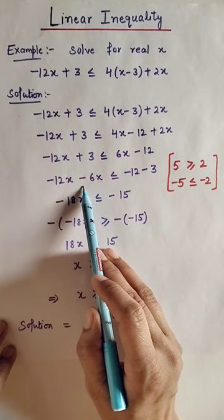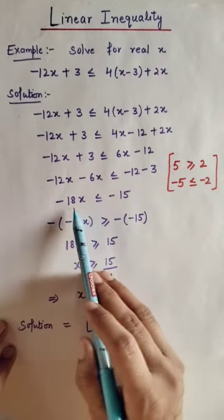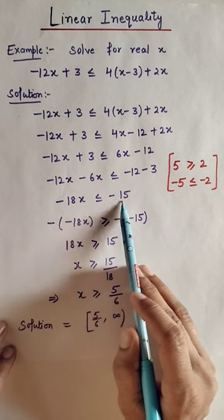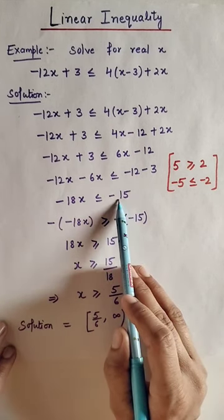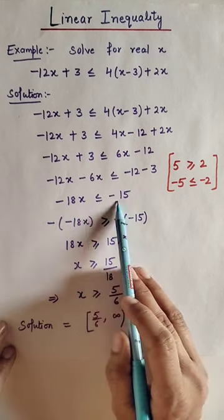We shift 6x to the left side and -3 to the right side. Then we get -12x - 6x less than or equal to -12 - 3, which gives -18x less than or equal to -15. Now to remove the negative, we need to multiply both sides by negative.